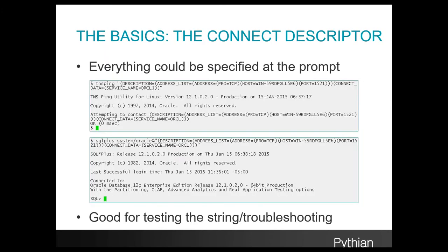Going back to the very basics: we can put all of that connect descriptor information right in at the command prompt, and we have been able to for quite a while. In these two examples, you can see first I do a TNSping from a Linux command prompt, and I can put the full connect descriptor in there — not relying on a tnsnames entry or net service name at all. In the second example, I'm providing credentials as well and actually connecting to the database, going end to end to make sure I can connect.